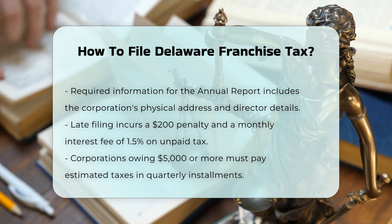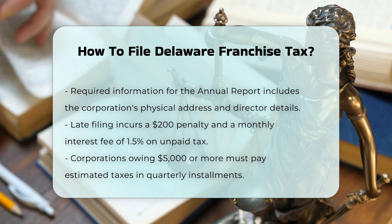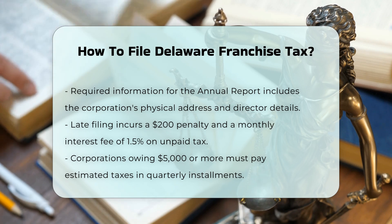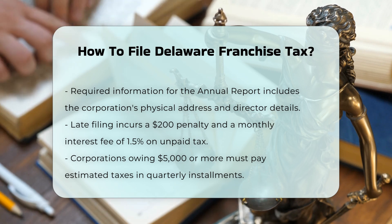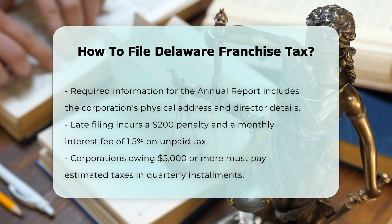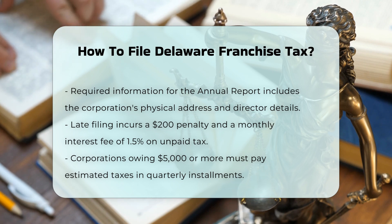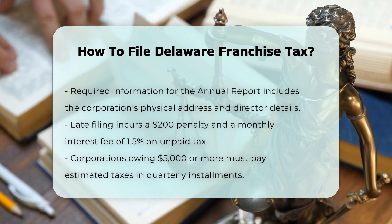Additional Requirements. Corporations owing $5,000 or more in tax must pay estimated taxes in quarterly installments due on June 1st, September 1st, December 1st, and the remainder by March 1st.